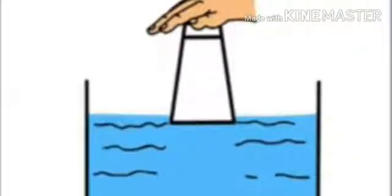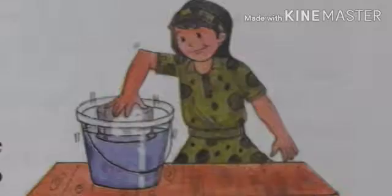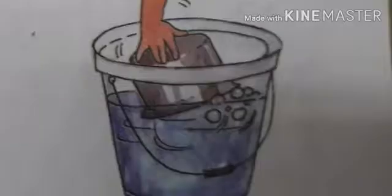Activity 1. Here, we have taken one container filled with water and another narrow container that we kept on the water in an upside down position. When we press that narrow container into the water, what happens children? Yes, water will not enter in that small container. Now, we will tilt that narrow container a little.